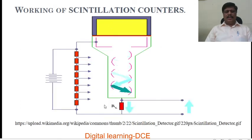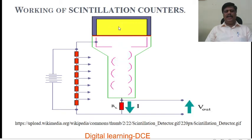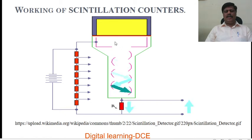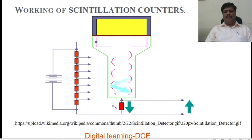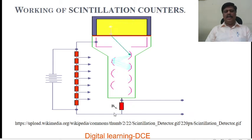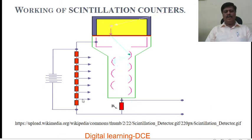This animation shows how incident radiation enters the scintillator and produces a scintillation. That scintillation is converted into photons, which are made incident on the dinodes. The dinodes multiply the photoelectrons, and finally the multiplied photoelectrons pass through the load resistance to produce an output voltage pulse across the load resistance. The dinodes are connected by different resistors to produce different high voltages, which are connected to the high tension battery with negative and positive terminals.